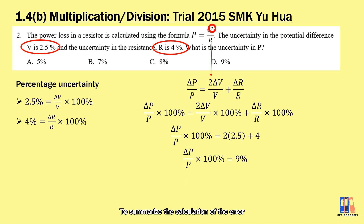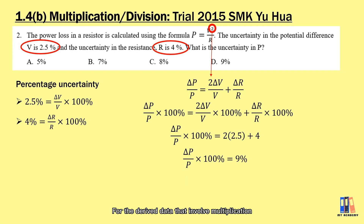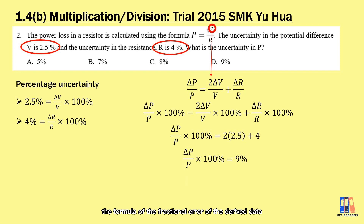To summarize the calculation of the error: if the calculation involves addition or subtraction, you calculate the absolute error simply by adding all the errors involved. For derived data that involves multiplications or divisions, you apply the formula where the fractional error of the derived data equals the total of fractional errors in the formula.